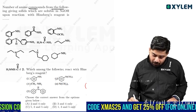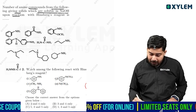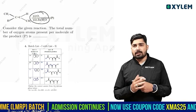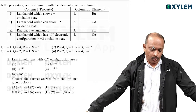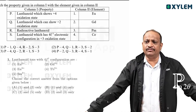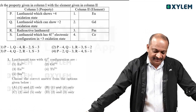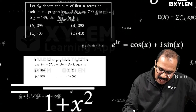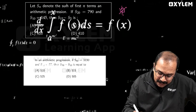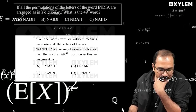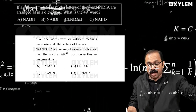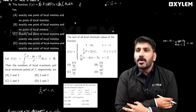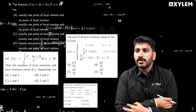Number of amine compounds from the following giving solids which are soluble in NaOH. Next one is ozonolysis. Match the property given in column 1 with the element given in column 2. Radii of two planets A and B: R and 4R. If all the permutations of the letters of the word India — India is my country. Local maximum, local minimum concept to be used.